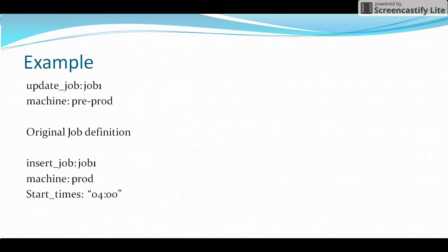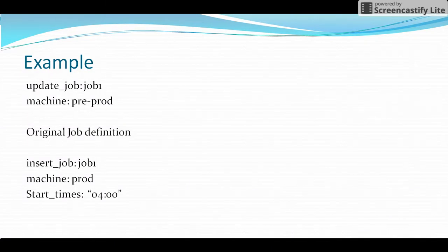In the original job, start_time is set to trigger at 4 AM. If we want to change that schedule time, we can give: update_job job1, machine: pprd, then start_time with a new time — maybe 7 AM — based on our requirement.